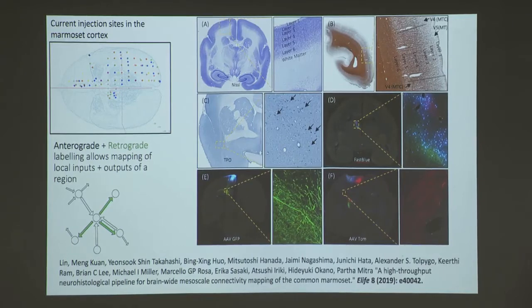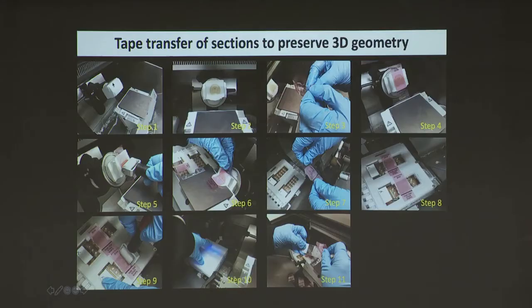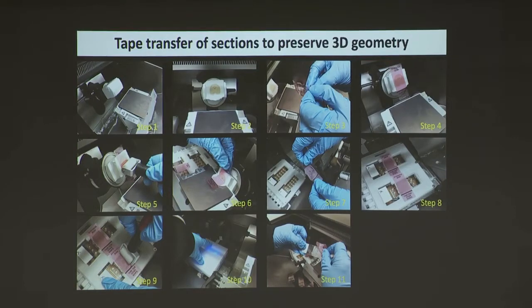We create a grid of injections across the brain mapping outputs via anterograde tracers and inputs via retrograde tracers. One key technical element is how we cut the brains, stain them, and image them — using the so-called tape transfer method. We cut the brain into very thin sections, about a tenth of the thickness of a human hair or even thinner. We use adhesive tape stuck on to a block, then section it. This works for mouse, for marmoset, and actually works for humans as well.